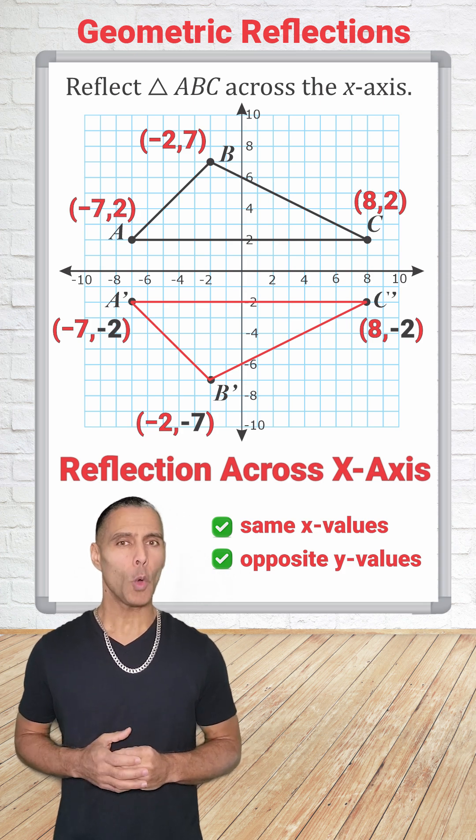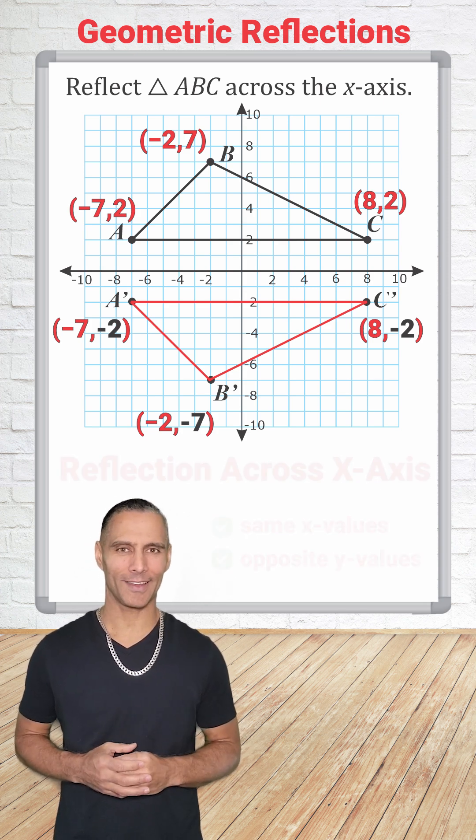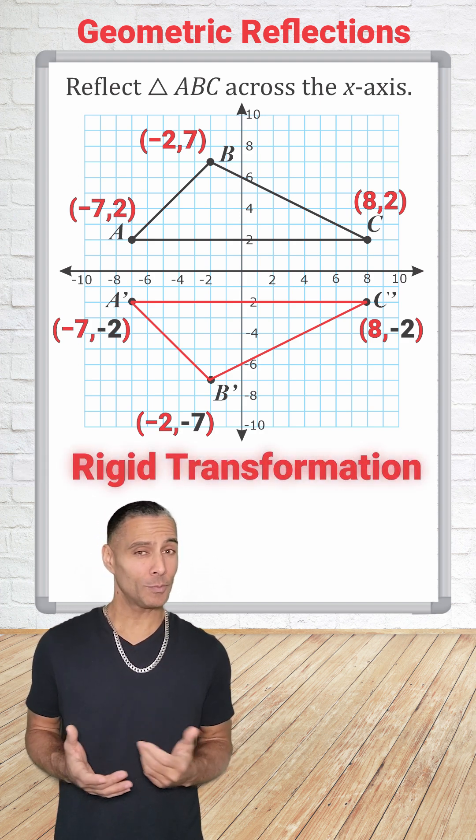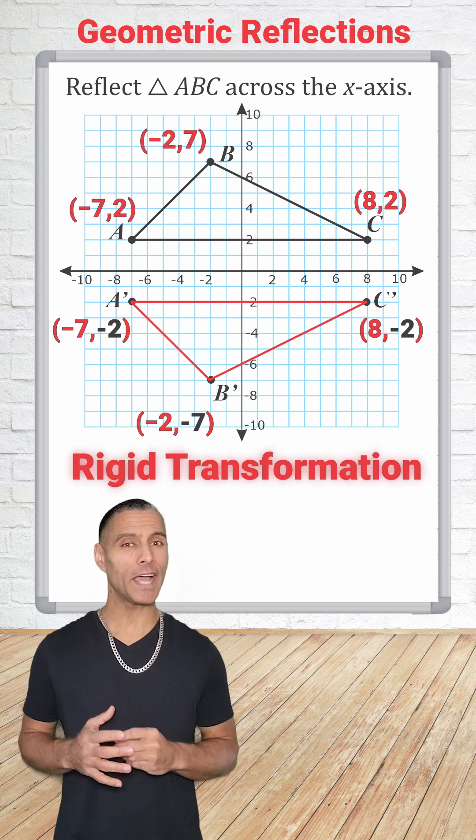It fits exactly into place while maintaining its shape and size. One important thing to remember is that a reflection is a rigid transformation. This means that the size and the shape of the figure will not change.